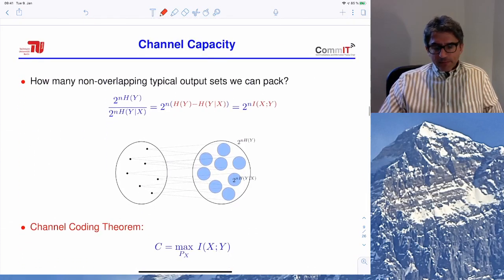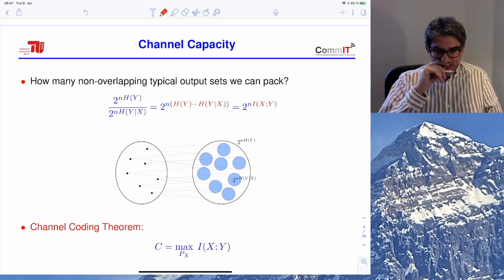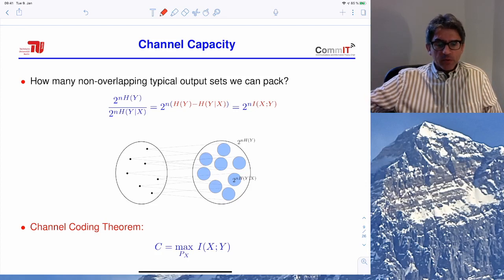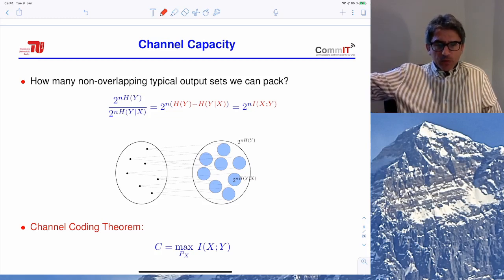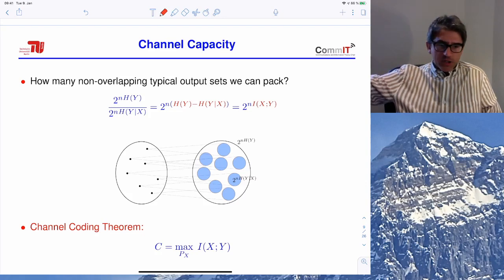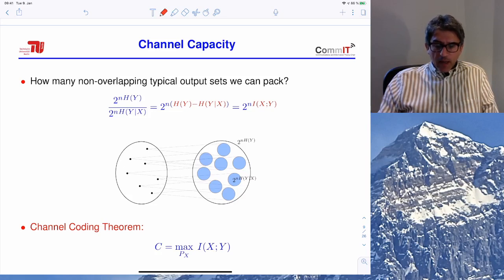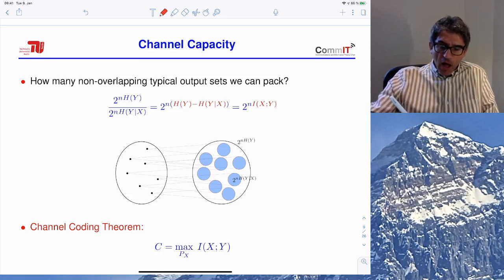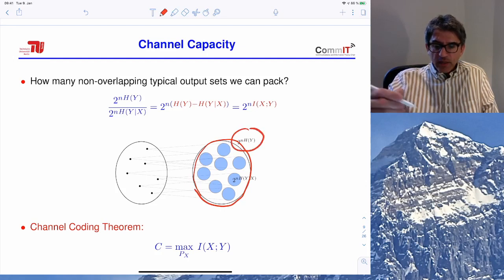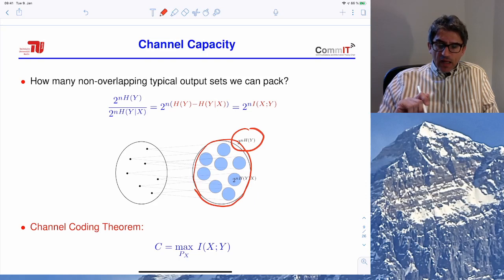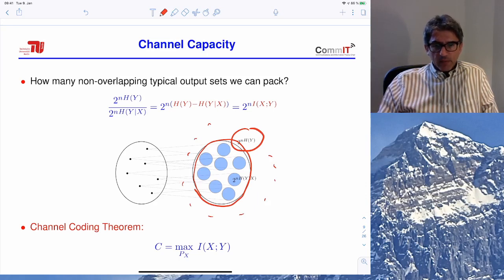We can abstract this problem as follows: take long sequences of the input and transmit them one symbol at a time through the channel. At the output we have a long sequence of observation variables. There is a set of typical output sequences of size 2^(nH(Y)), and the channel is not likely to generate anything outside this set — only typical sequences are likely to appear.